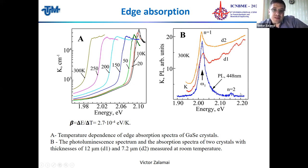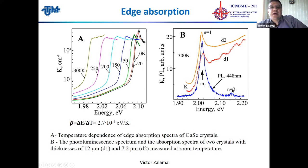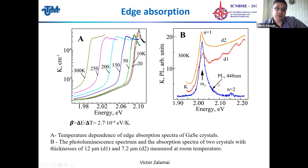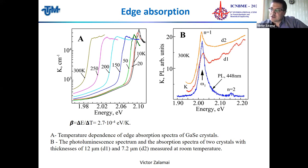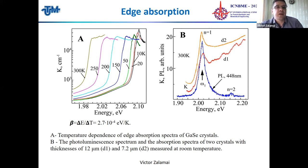In the photoluminescence spectra we observed features corresponding to a transversal polariton and also the excited state of this exciton polariton. We calculated the Rydberg energy of this exciton and received approximately 120 millielectron volts. Such a high Rydberg energy indicates that this exciton is most probably a Frenkel exciton.